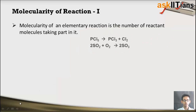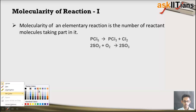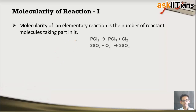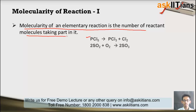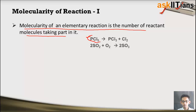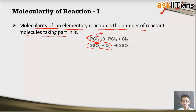The next thing is molecularity of a reaction. In the case of an elementary reaction, the molecularity is equal to the number of reactant molecules taking part in it. In one example, there is only one reactant molecule, so it is a unimolecular reaction with molecularity equal to 1. In another elementary reaction involving two molecules of sulfur dioxide and one molecule of oxygen, the total number of reactant molecules is three, so it is a trimolecular reaction.